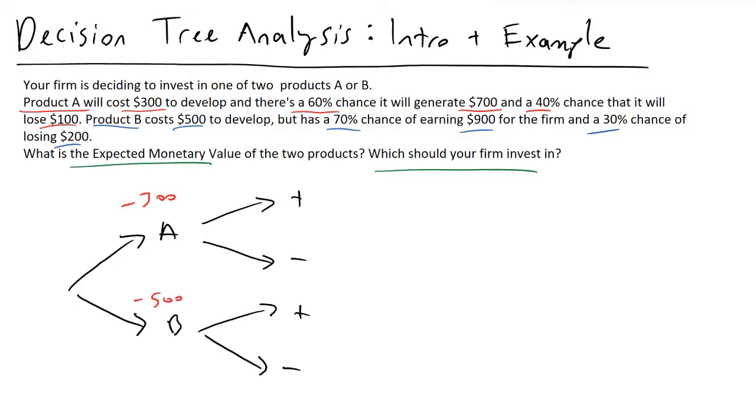In the good scenario for product A, we know that it will earn us $700. So I'm going to write plus 700 right there. And we know that in the good scenario for product B, it's going to earn us $900. So I'm putting $900 right there. And then for the negative scenarios in which it's losing us money, we know that product A was going to lose us $100, and product B was going to lose us $200.